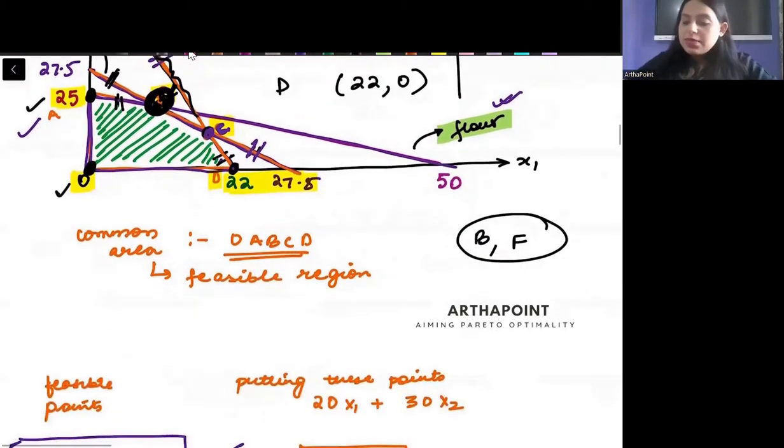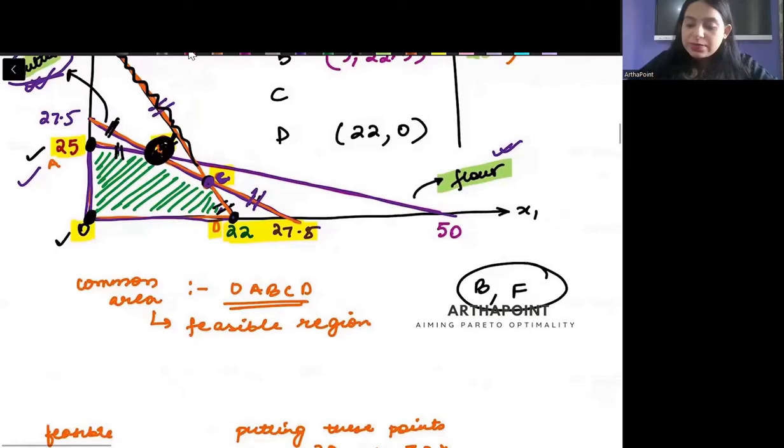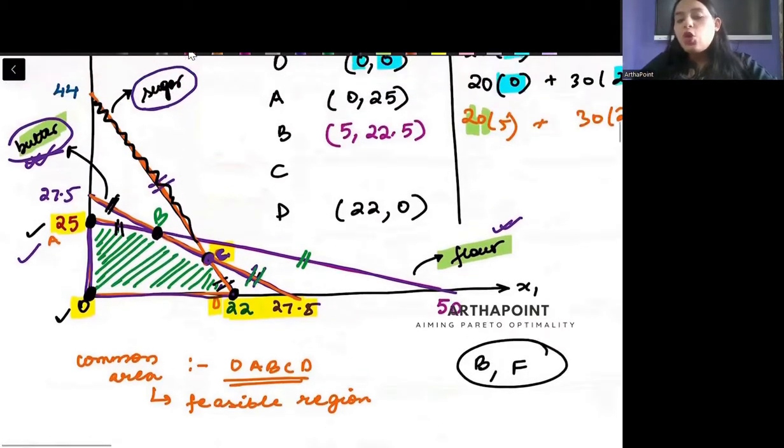Where I am maximizing, this point B that I am talking about, this point B is that point where I am completely exhausting the flour, where I am completely exhausting the butter, but I am not completely exhausting the sugar. I am at a point which is inside the sugar constraint.